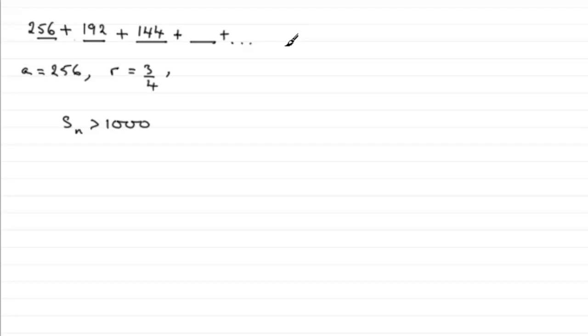Well we know that a is 256, the first term. The common ratio we found out earlier is 3 quarters. So we should know as well a formula for the sum of the first n terms of a geometric series.